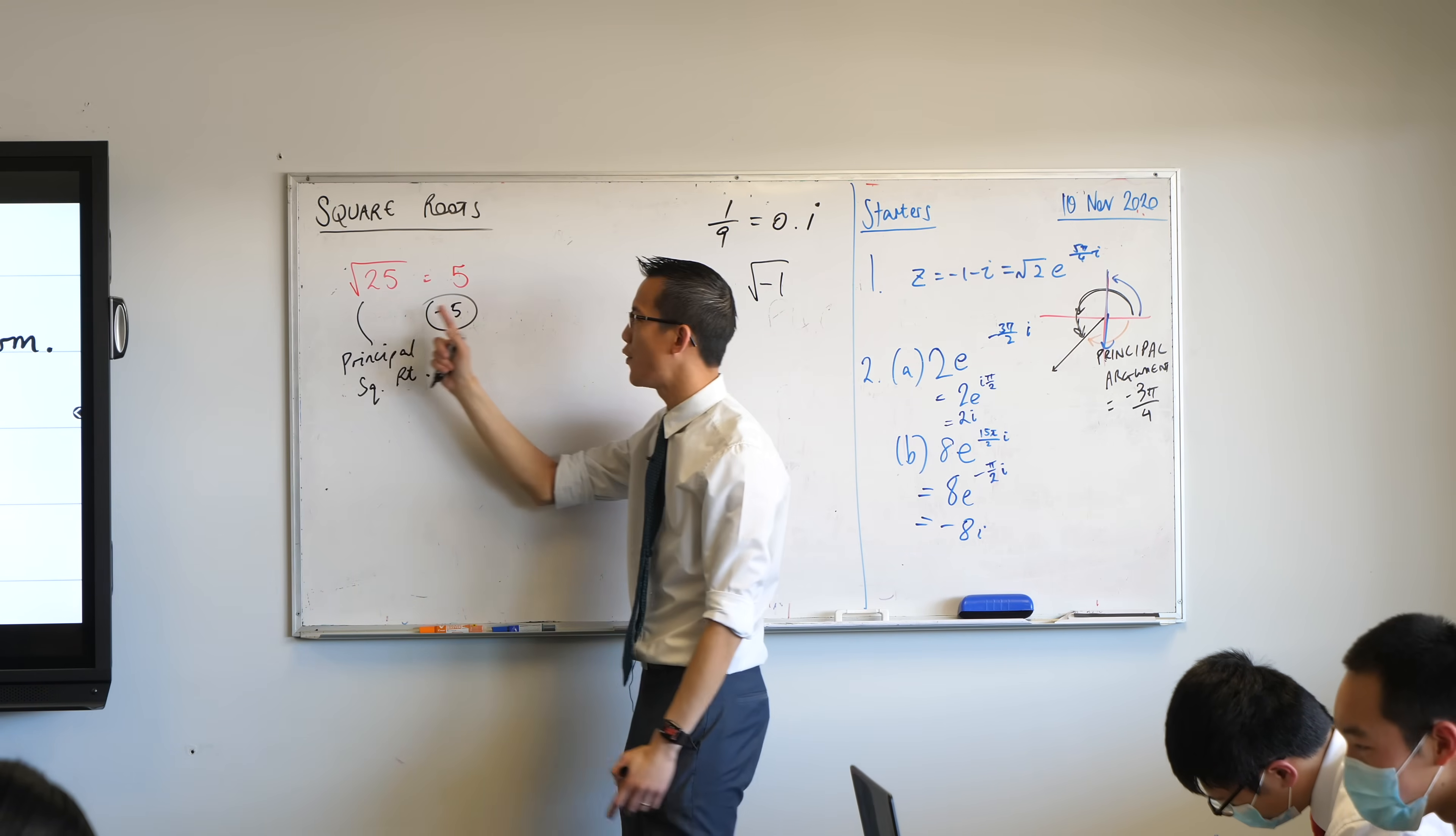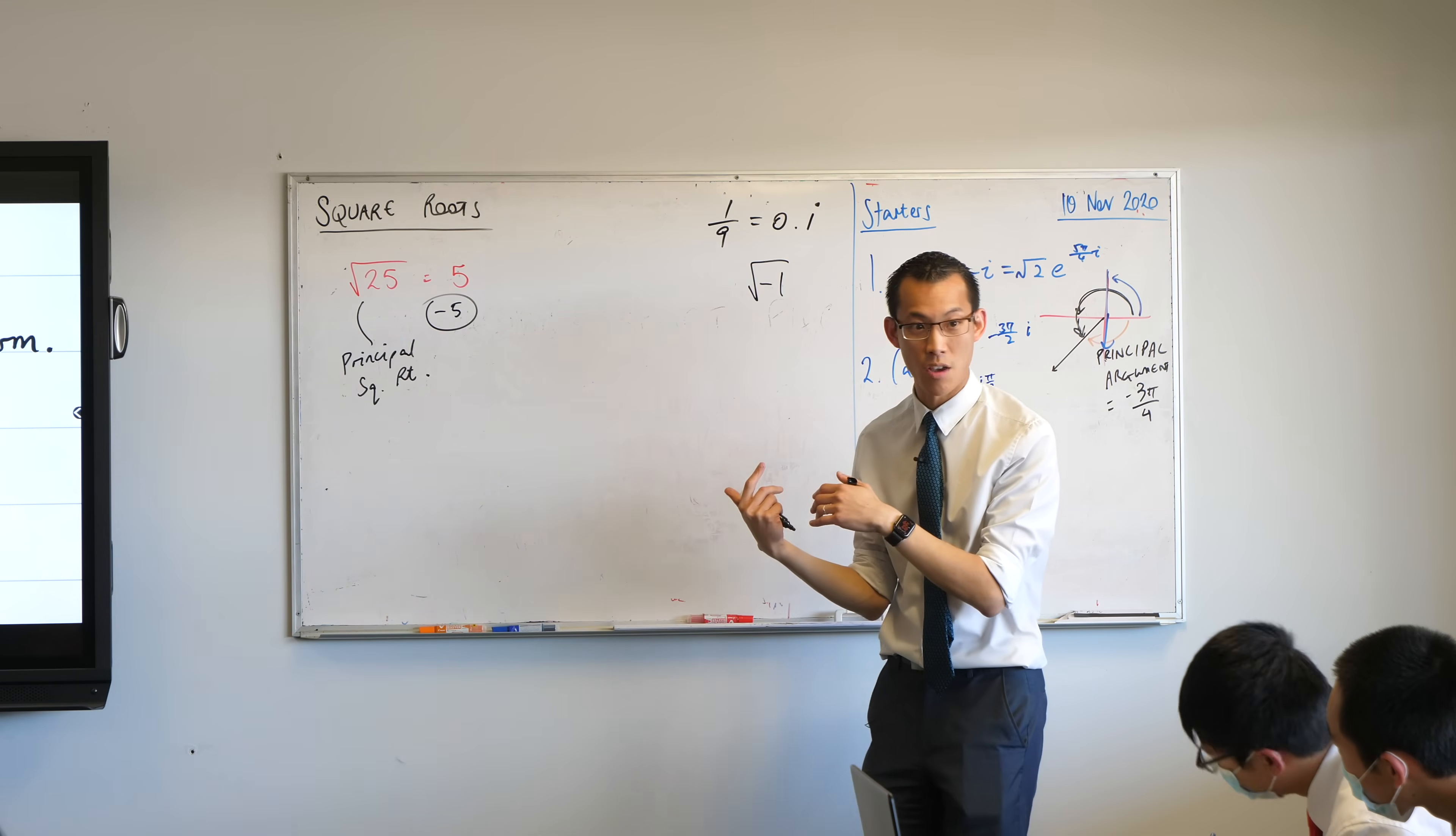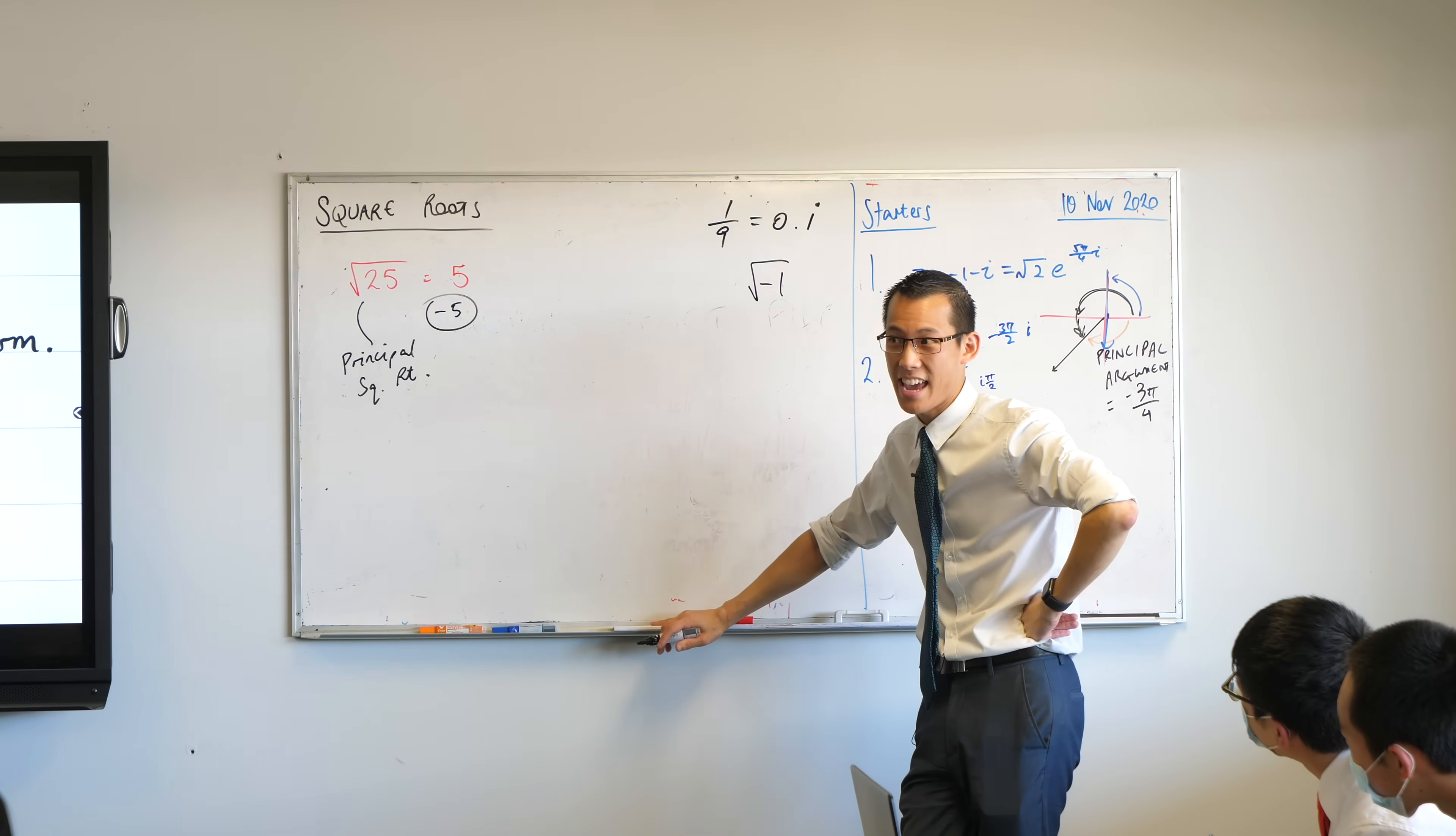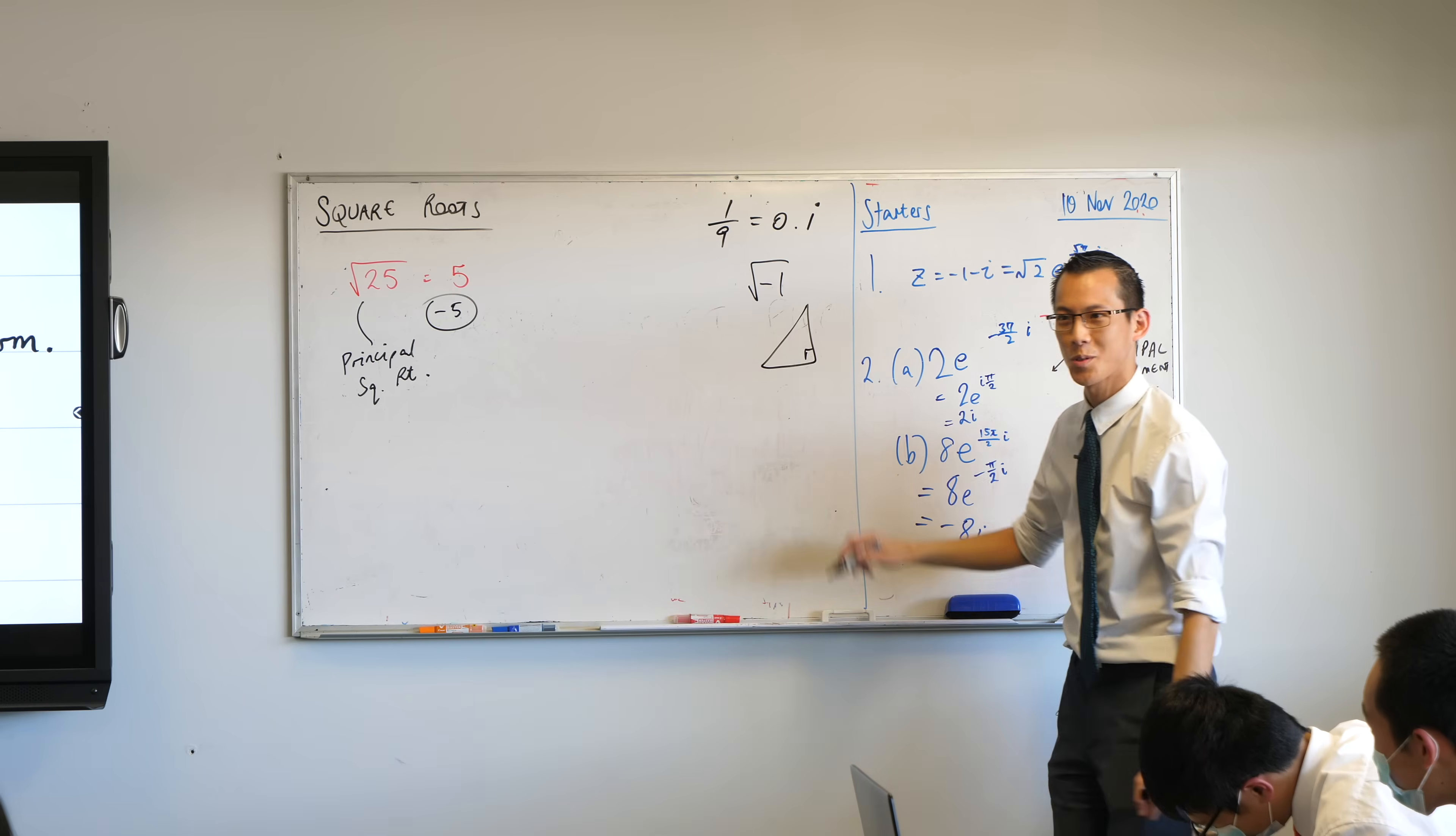Because where did we first meet the square roots of any numbers? What topic were we in when we first needed to actually use these things? I heard someone say quadratic. I heard trig before that, before surds, year seven and eight. Think, end of year seven, beginning of year eight. Pythagoras. It was right angled triangles.